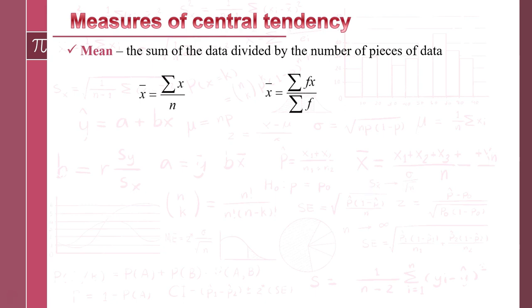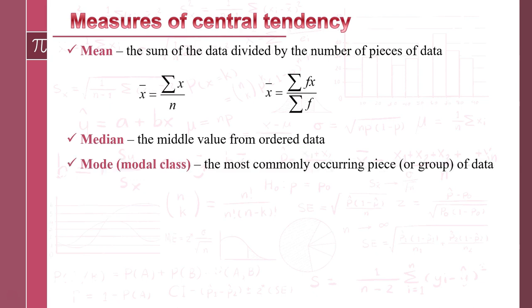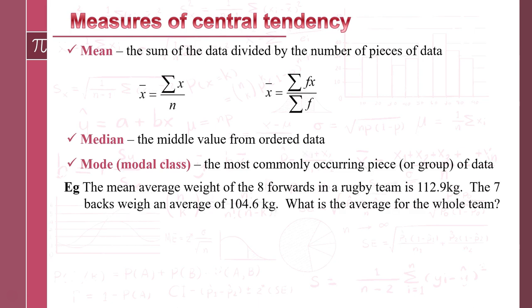And if we have grouped data, similar kind of thing. We've got frequency times by the data value divided by the sum of the frequencies, which again is just how many pieces of data there are. Then we've got the median, which is just the middle value from ordered data, and the mode or modal class, which is the most commonly occurring. That stuff we know, so let's have a quick example.